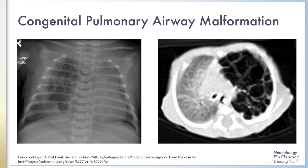The chest radiograph on the left and CT image on the right are examples of congenital pulmonary airway malformations, or CPAMs. CPAMs comprise about 25% of congenital lung lesions and are more common in males. CPAMs are multicystic masses of lung, which are typically unilateral and involve a single lobe.